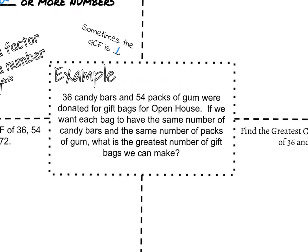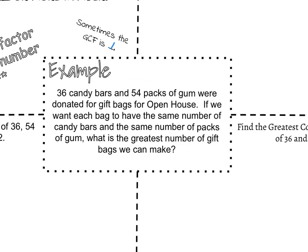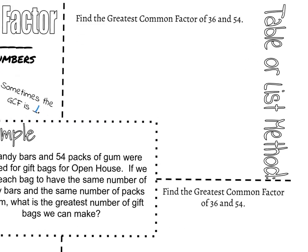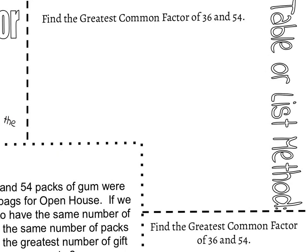Let's look at a situation where we would actually use greatest common factor. If we had 36 candy bars and 54 packs of gum donated for gift bags for open house at school, we want each bag to have the same number of candy bars and the same number of packs of gum. We want to know what's the greatest number of gift bags we can make. This relates to problems we've been doing in class — we're taking items and putting them into equal smaller groups.